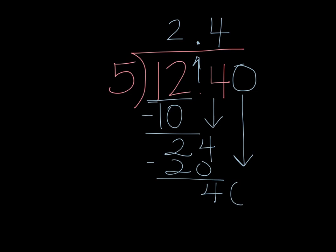Now I have a zero to bring down, and I'm working with the number forty. Forty divided by five is eight. Eight times five is forty. There is nothing left over, so no need to add any more zeros, and this problem is done. The answer is two and forty-eight hundredths.